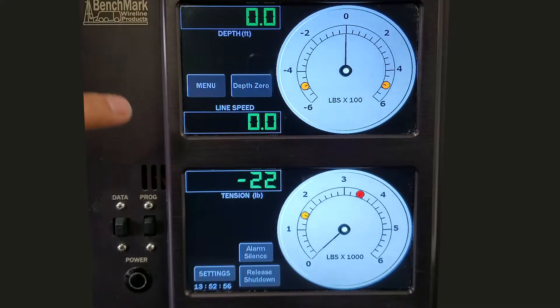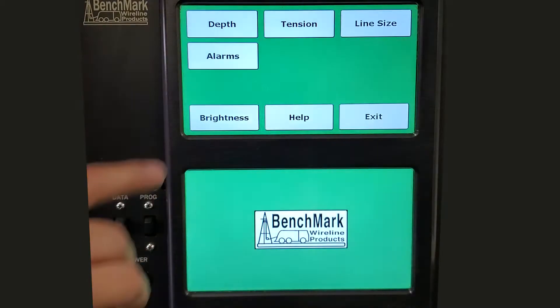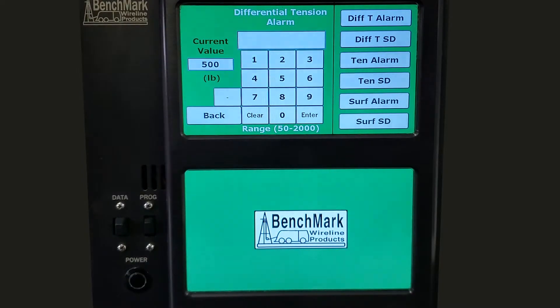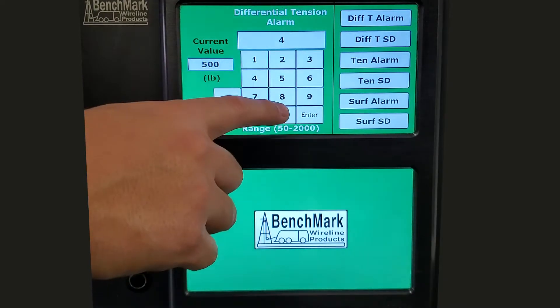To set the alarm values, go to Menu, then Alarms, and then press Diff T Alarm. Then select the values for that alarm setting and press Enter.